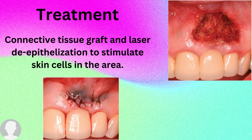After the laser treatment, a graft is placed to close the area. That is the treatment for amalgam tattoo. Once the laser treatment is done, we need to ask the patient to use an extra soft or ultra soft toothbrush in order to not hurt the gums.